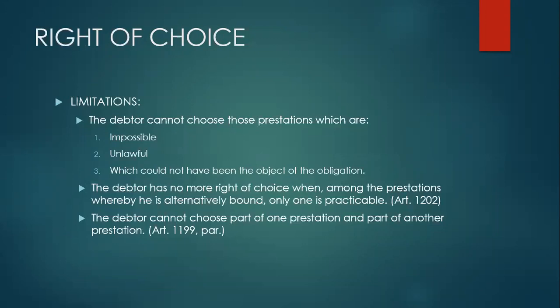For example, S will deliver his horse, or his carabao, or his refrigerator. So the alternative prestations here are the horse, the carabao, or his refrigerator. But the performance of one of them is sufficient to extinguish the obligation. What if the horse and the carabao were lost without the fault of S? Therefore, only one in the alternative prestations remained — the refrigerator. So, since only one is practicable, then the debtor should deliver the refrigerator, which is the only one practicable.